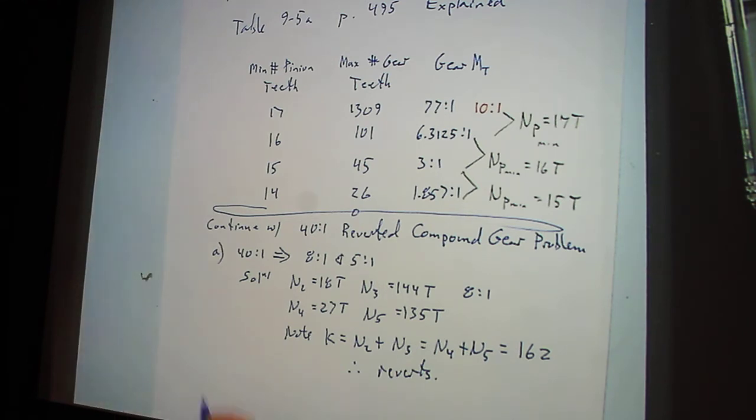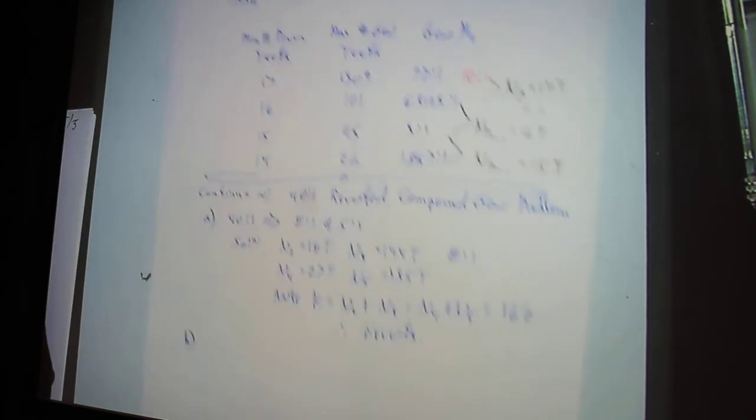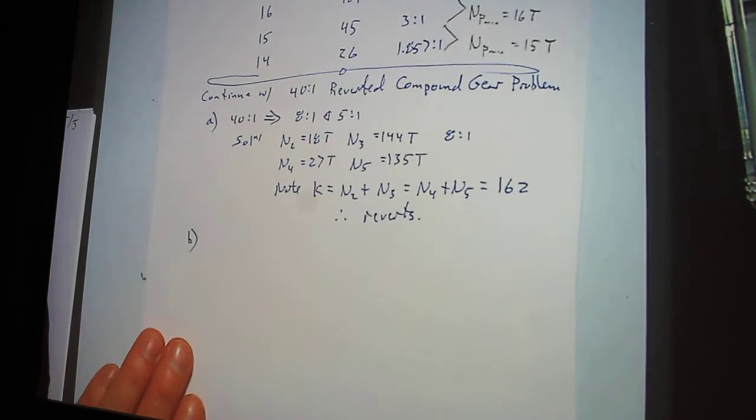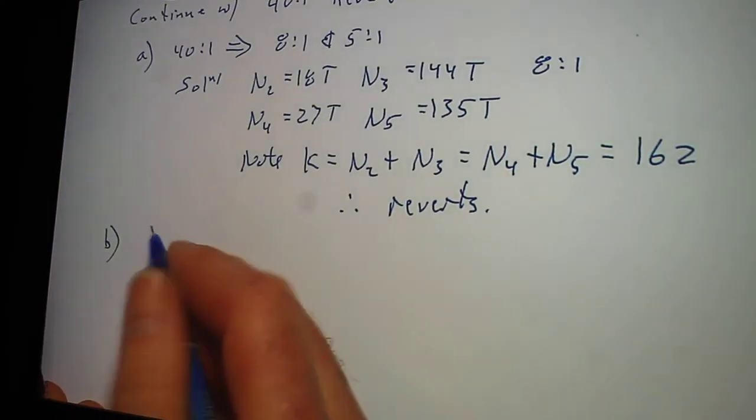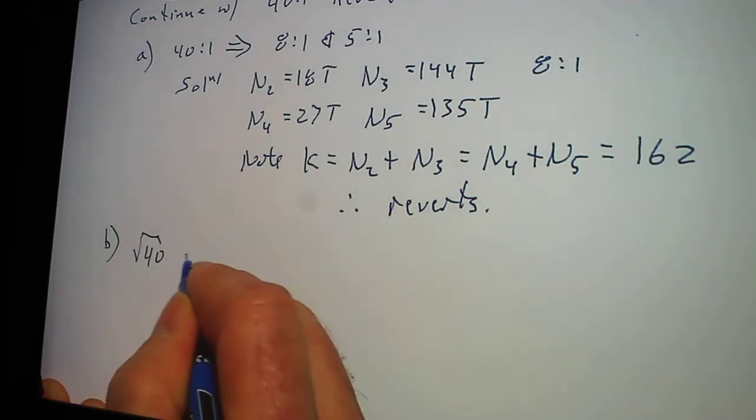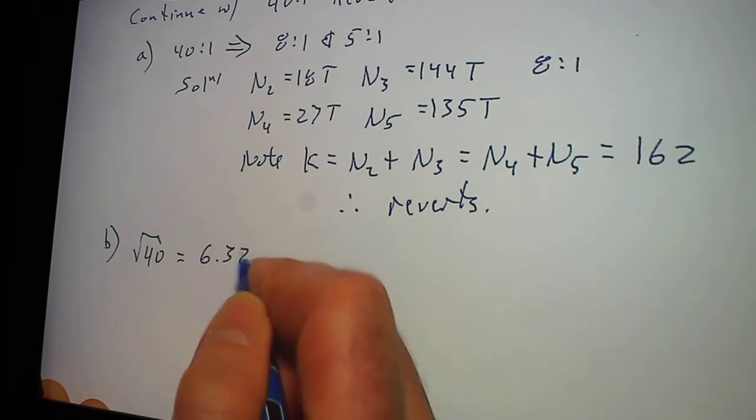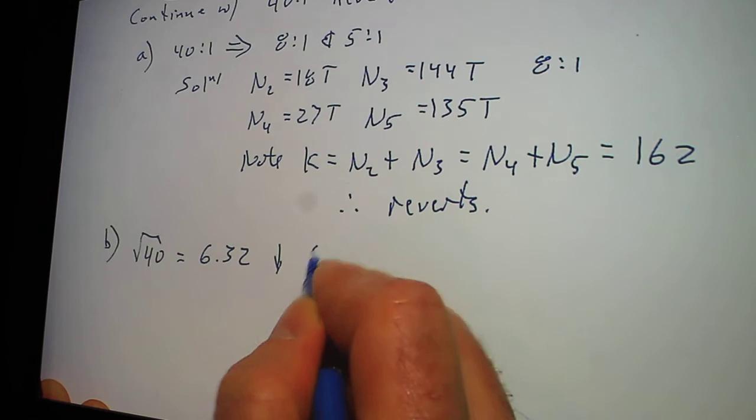The next one, what we do is we do the square root. So on this one here, we're going to look at the square root of 40. That equals 6.32. We round down to 6.